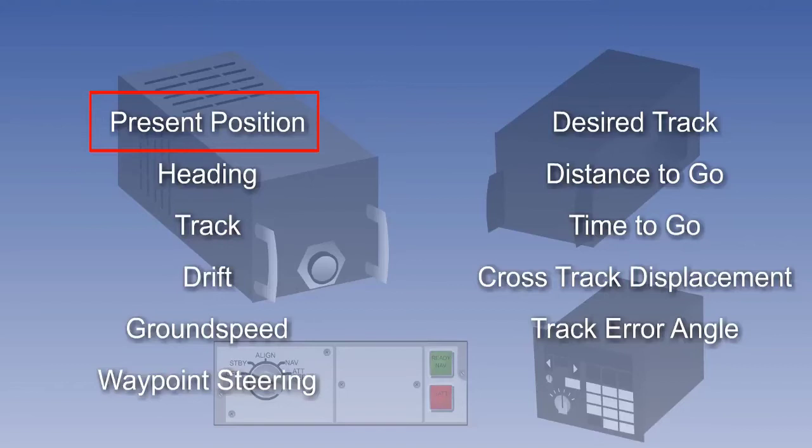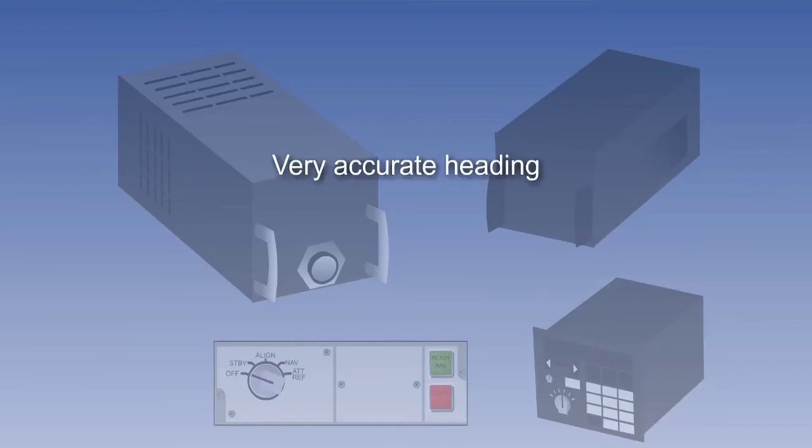It is often assumed that the most important single advantage of INS over previous systems is that it produces a continuously computed present position with no dependence on external references. However, what is almost as important is that in order to compute this position, it was necessary to greatly improve heading measurement accuracy. INS heading is about ten times more accurate than previous systems, which were gyromagnetic compasses.